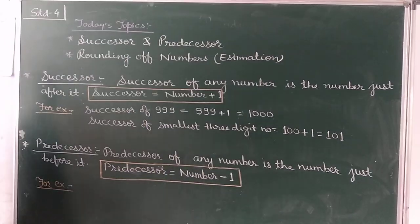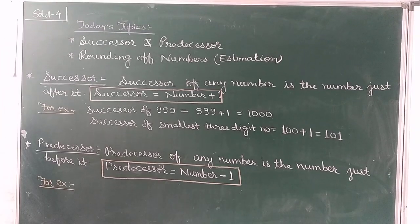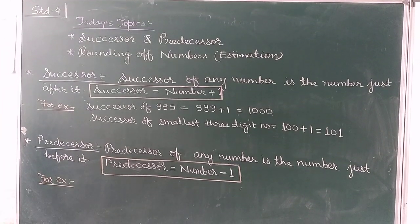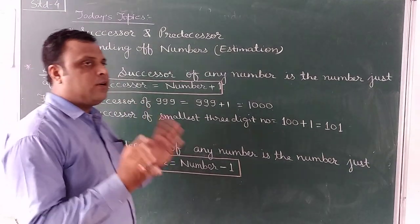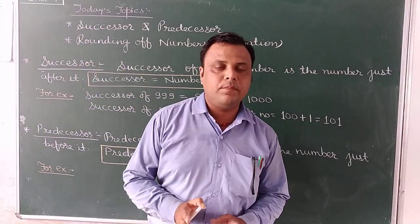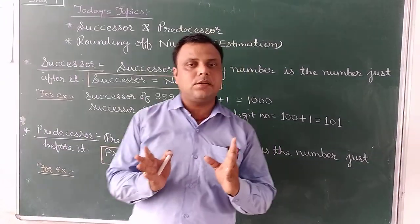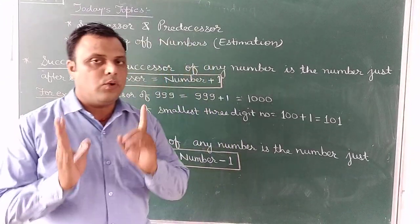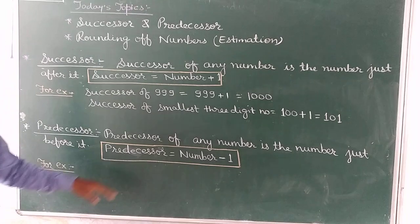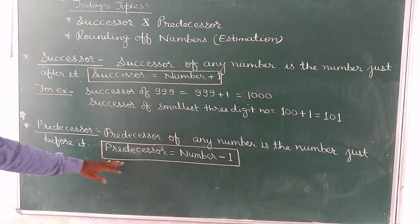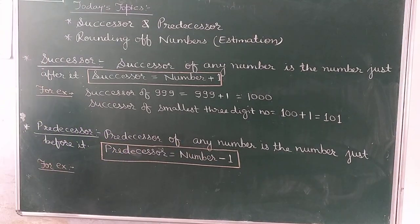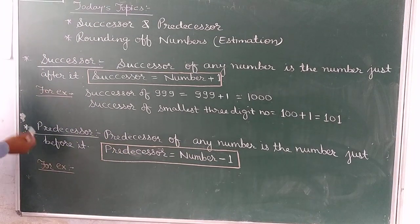Predication of any number is the number just before it. It means when we want to find the predication of any number, we have to just subtract 1 from that number. That is the formula: predication equals number minus 1.